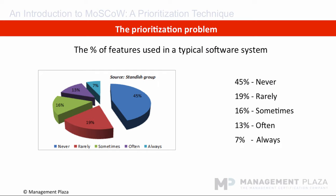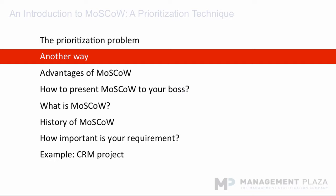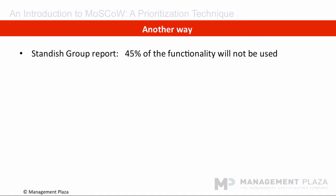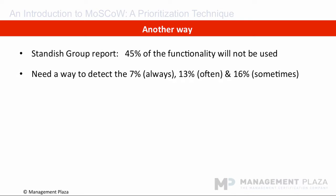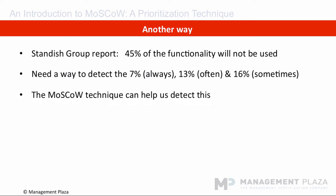Wouldn't it be great if you had a technique to help you figure out the always and often functionality and deliver this first? There is another way. Let me repeat one of the main points of this Standish Group study: 45% of the functionality will never be used, so this is a complete waste of time. We need a way to detect the 7% that will always be used, the 30% that will often be used, and the 16% that will sometimes be used. The good news is that we can use the Moscow technique to help us do this.